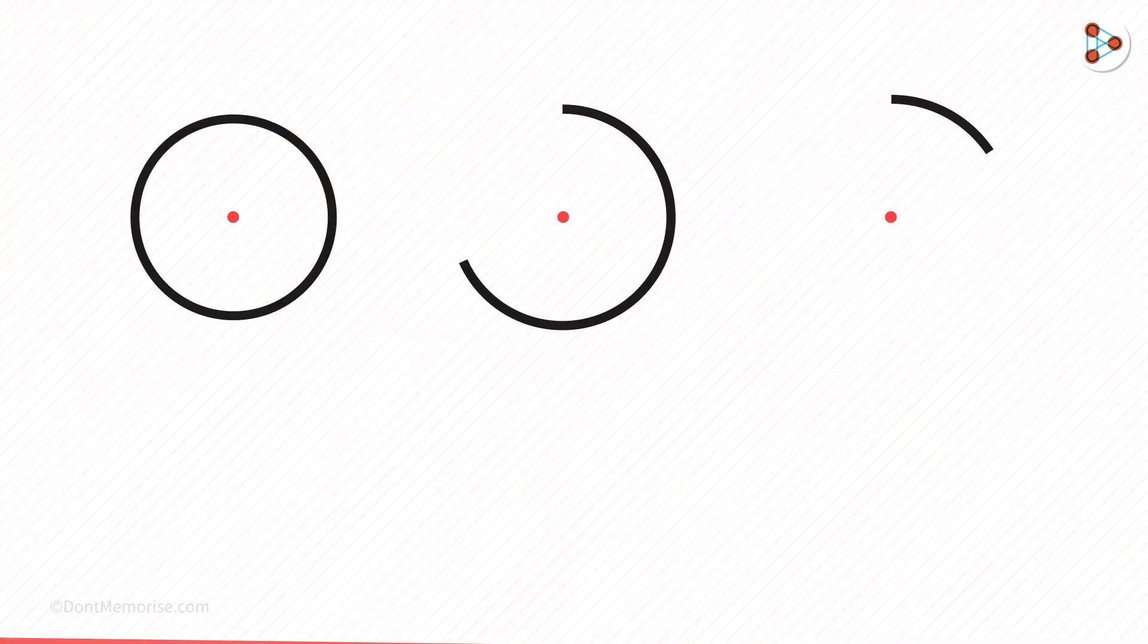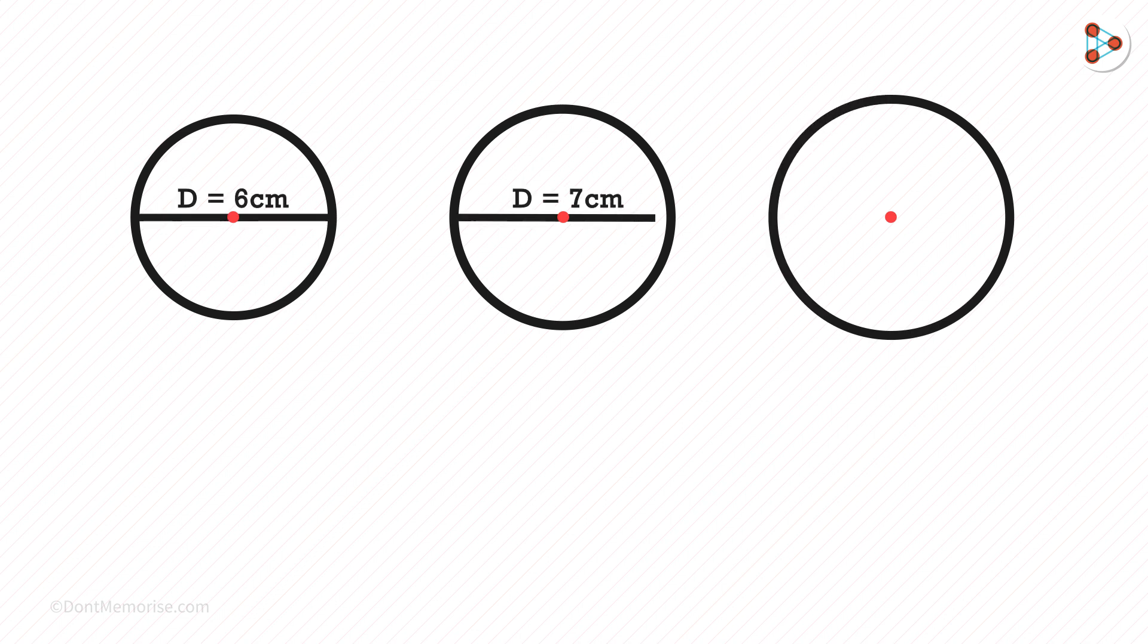Now you can take three circles with diameters 6, 7 and 8 centimeters. Then with a string, you can find out the circumference of each circle.